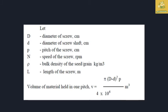This is the formula: V = π × (D² − d²) × P × N × ρ ÷ 4, in cubic meters. Here D is the diameter of the screw, small d is the diameter of the screw shaft, P is the pitch of the screw, N is the speed of the screw, and ρ (sin) is the bulk density of the material in kilograms per cubic meter. L is the length of the screw. This gives the volume of material.